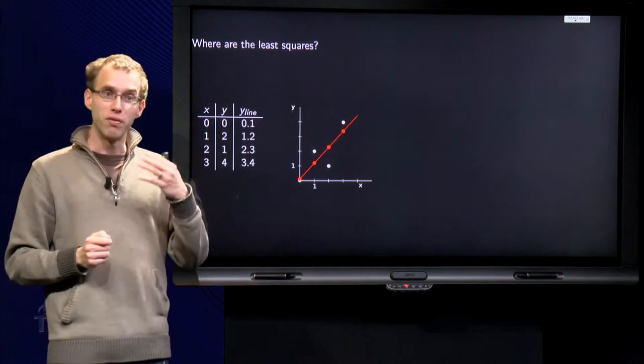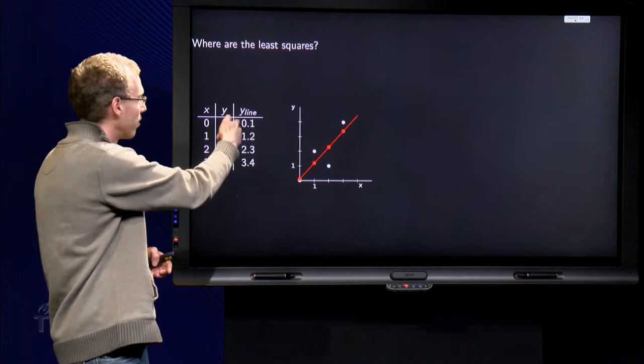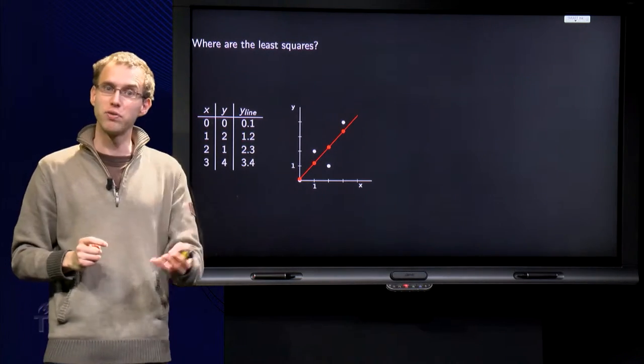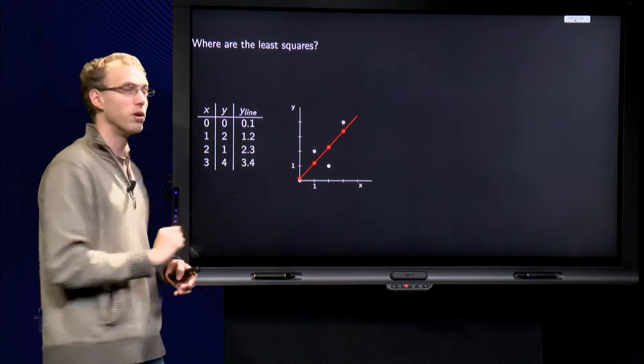So we have y equals 0.1 plus 1.1 times x, so the y's of the line are 0.1. If you plug in x equals 1, we get 0.1 plus 1.1 times 1 equals 1.2.